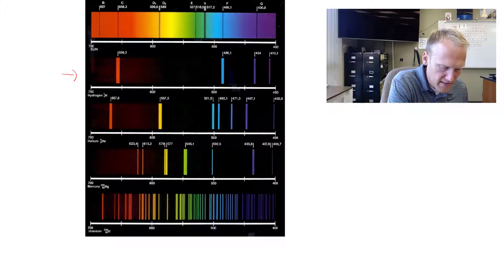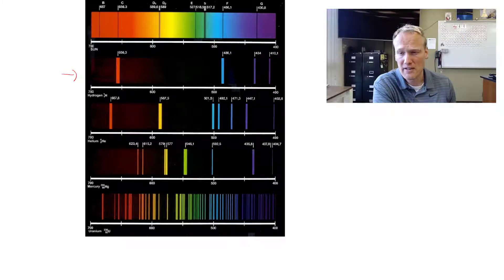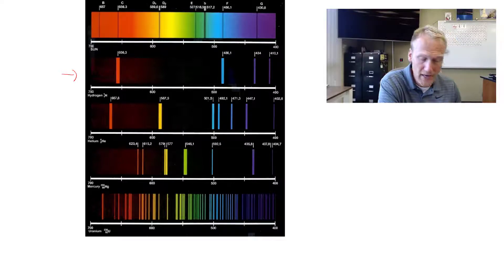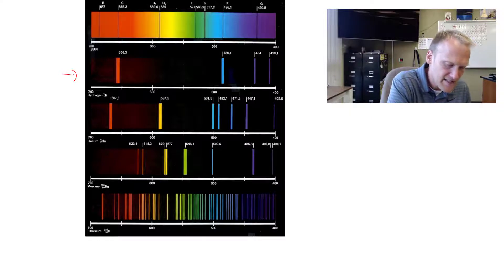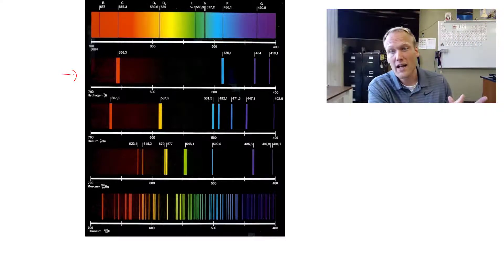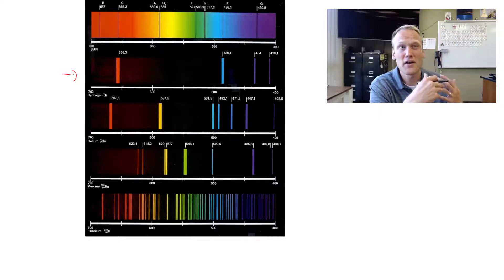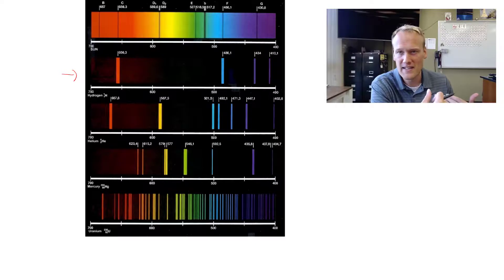Here's helium, and you can see it has different spectra or colors being emitted from that atom. We can go all the way down to mercury and uranium and look at the spectra of those larger elements. Notice that the sun, which gives off white light, has very few holes in the spectra. It's giving off all the different wavelengths, all the different colors that we see.